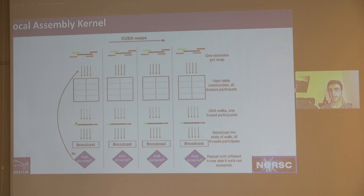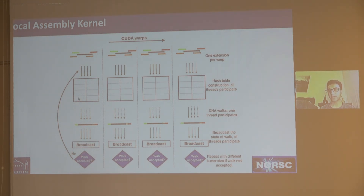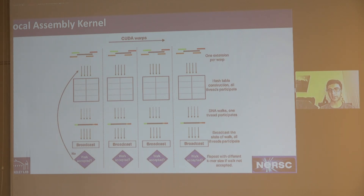After the traversal, we broadcast the walk outcome across the warp, because only one thread knows whether the walk succeeded or failed. If it succeeds, all threads proceed. If it fails, all threads go back together and rebuild the hash table with a different k-mer size. The broadcast is critical — without it, some threads would proceed while others would not, causing divergence. Here we use warp intrinsics to perform the broadcast efficiently.